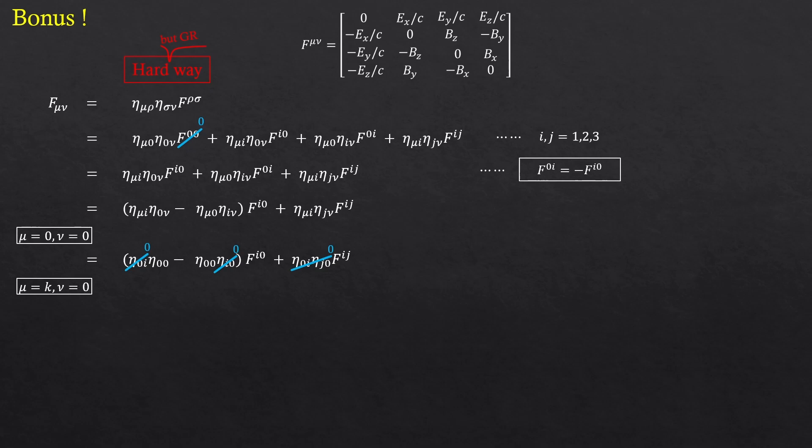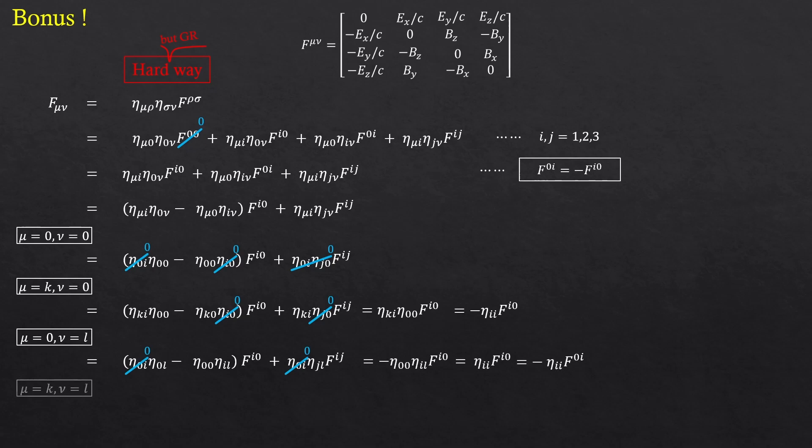Once again, the non diagonal elements of the metric are zero. So eta zero zero is minus one, and k being the same number as i should only survive. So this. All good. Similarly, for the case when mu is zero and nu is l, it's this one. And lastly, when both mu and nu are non zeros, it's this.